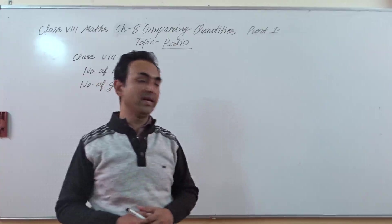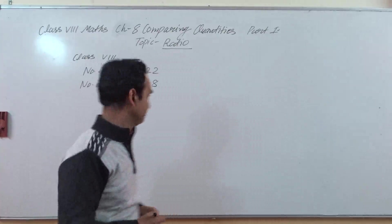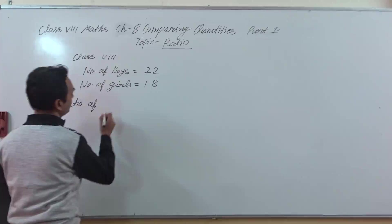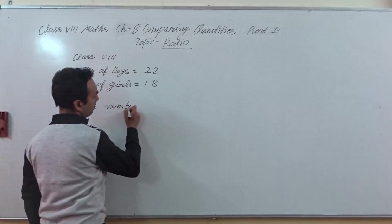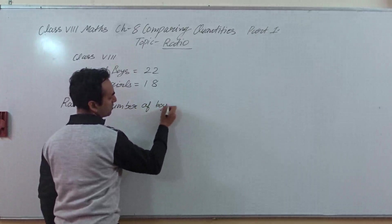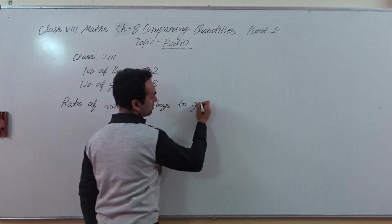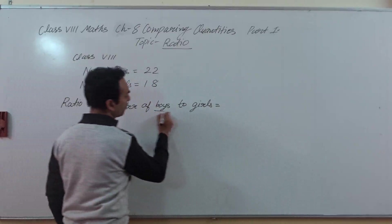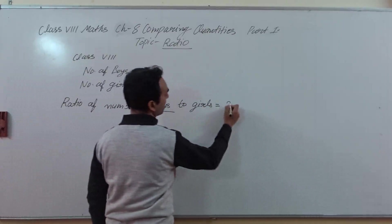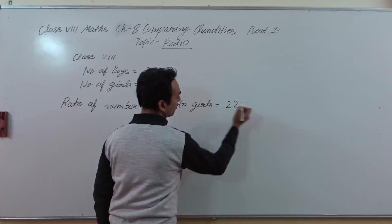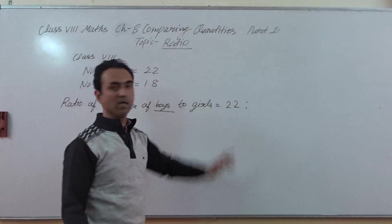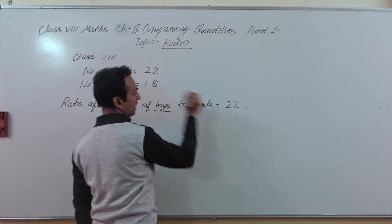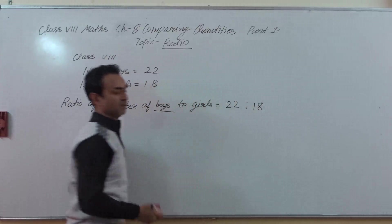Comparing one object with respect to another object — this is called a different type of comparing and the name is Ratio. The ratio of number of boys to girls equals: number of boys is 22, then the ratio sign (colon sign), then number of girls is 18.